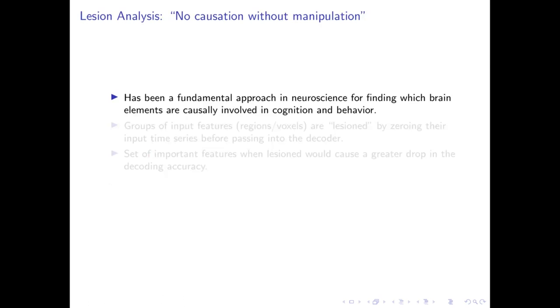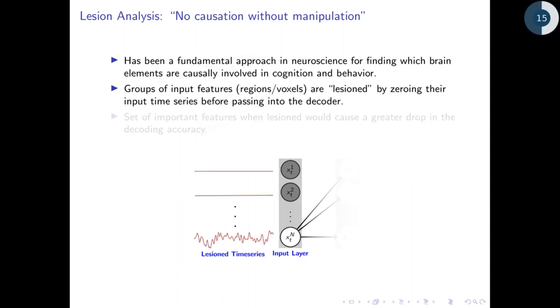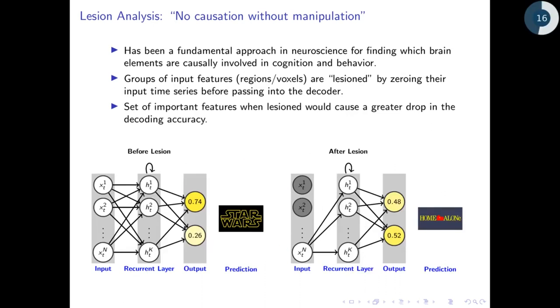Our first approach of interpreting RNNs is lesion analysis. Studying lesions has been a fundamental approach in neuroscience for finding which brain elements are causally involved in cognition and behavior. In our case, we lesion groups of input features by masking their time series to zero before passing them into the decoder.